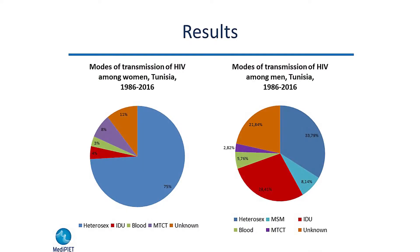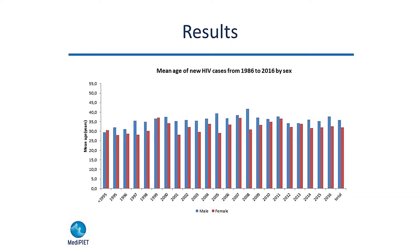For the modes of transmission, the first mode in women is heterosexual relations, and for men, the first is also heterosexual relations, but the second is injecting drug use. For the age of detected cases, for both men and women, young people are predominantly affected by the infection, between 30 and 35 years old.